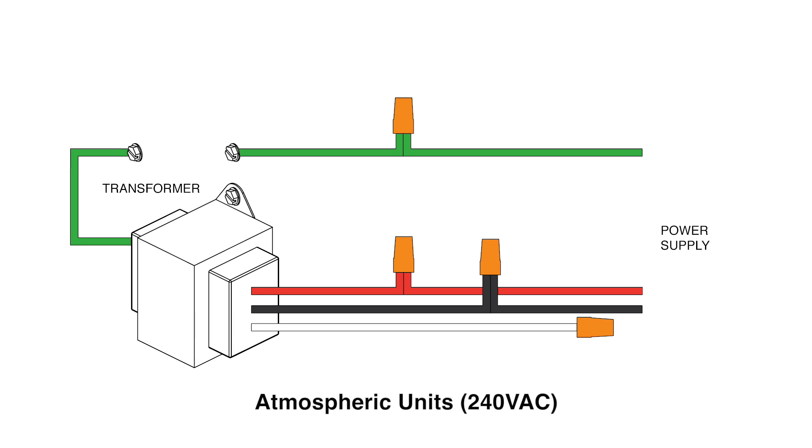Strip back the ends of the incoming wires as well as the black, red, and green wires from the transformer. Attach the incoming black wire to the black wire from the transformer using a wire net. Attach the incoming red wire to the red wire from the transformer. Attach the green ground wires. Use a wire net to terminate the white wire.